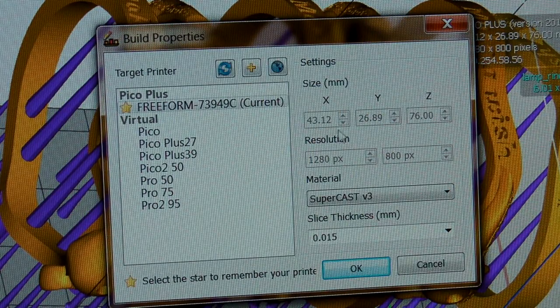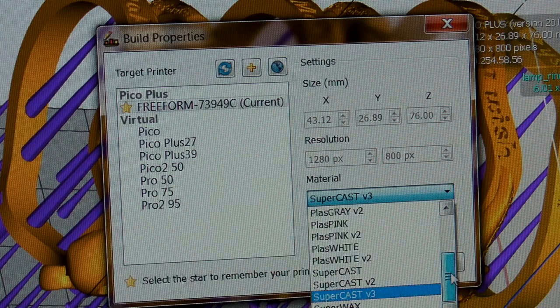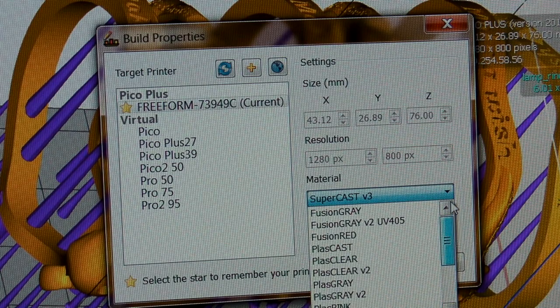Before printing, the Composer software lets you select what material you're printing in, and the thickness of each layer. I usually print at 15 microns.